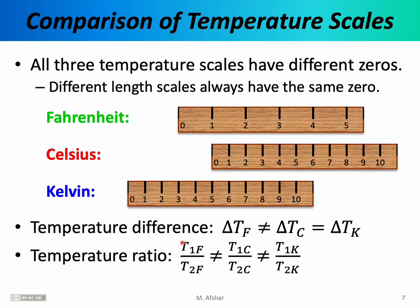We will also see many equations involving ratios of two temperatures. Ratios are straightforward with length or mass — for example, two inches divided by four inches equals two centimeters divided by four centimeters, both giving 0.5. However, that is not the case with temperature scales because they have different zeros. T1 divided by T2 expressed in Fahrenheit is not the same as T1 divided by T2 expressed in Celsius. So in general, when you see equations involving T, delta T, or ratios of temperatures, pay special attention to the units being used.